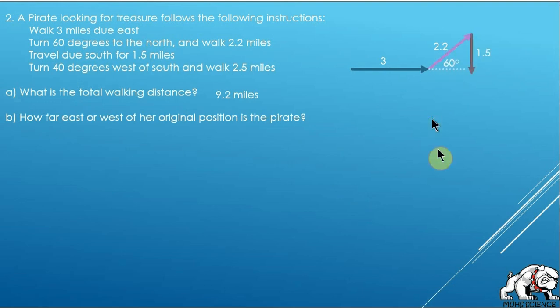Travel due south for one and a half miles, so there's due south one and a half miles. Turn 40 degrees west of south and walk two and a half miles. I'm facing south so I turn 40 degrees west of that, I walk two and a half.